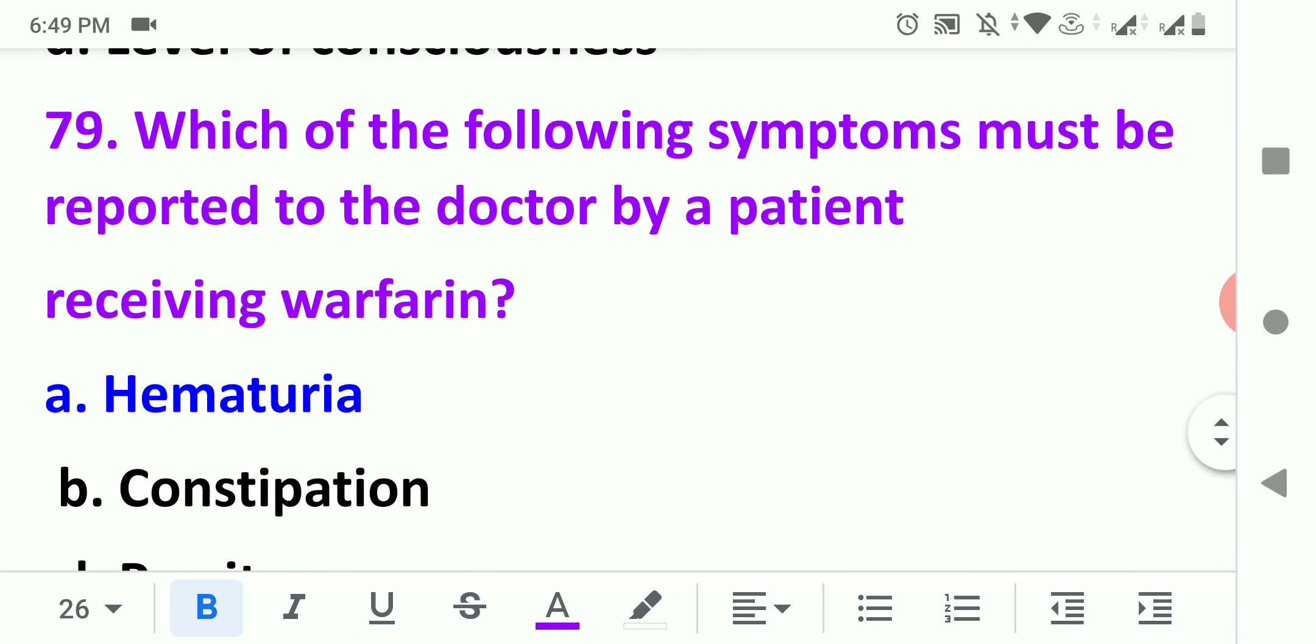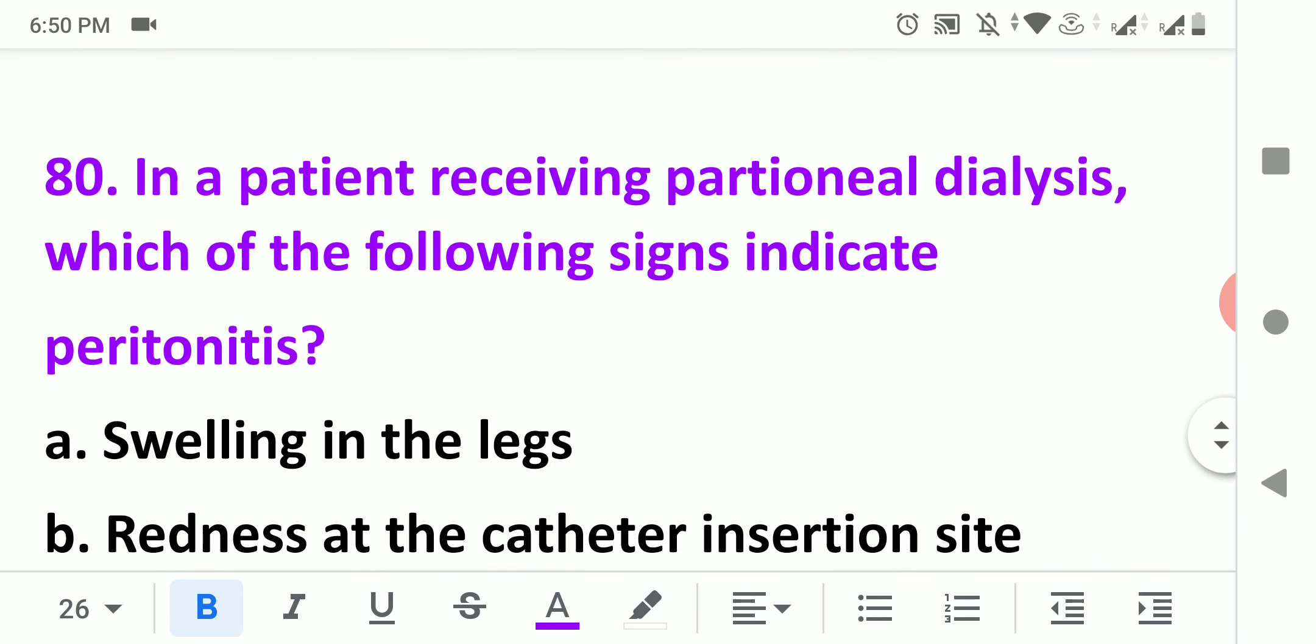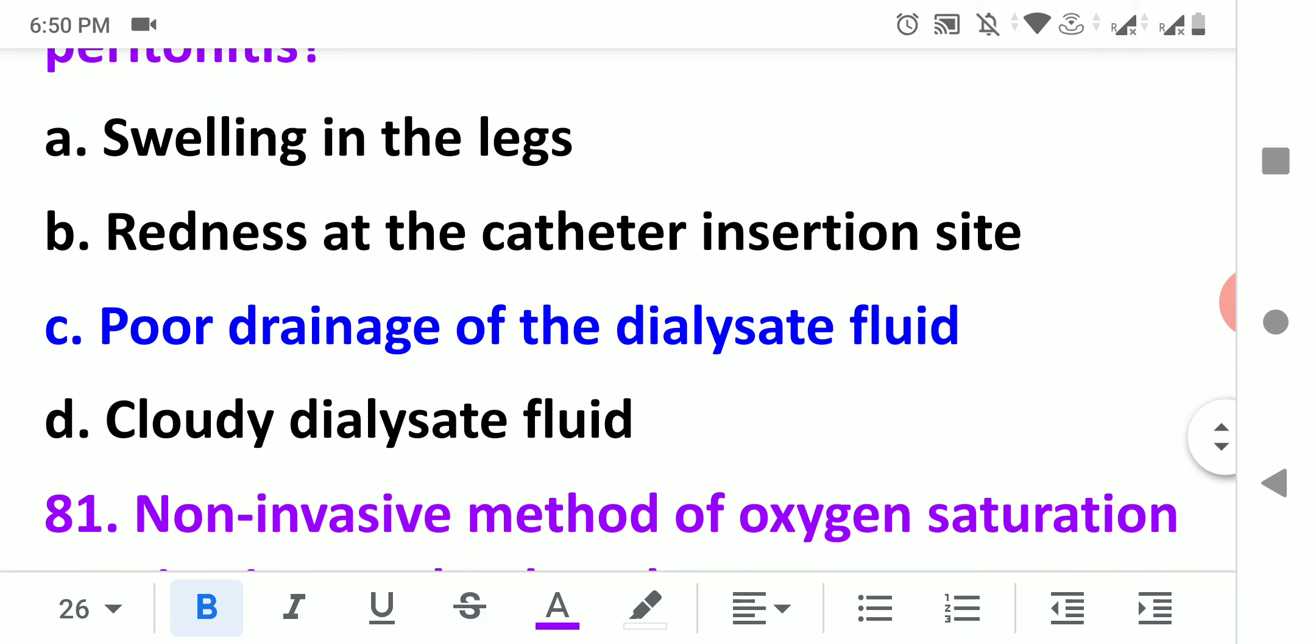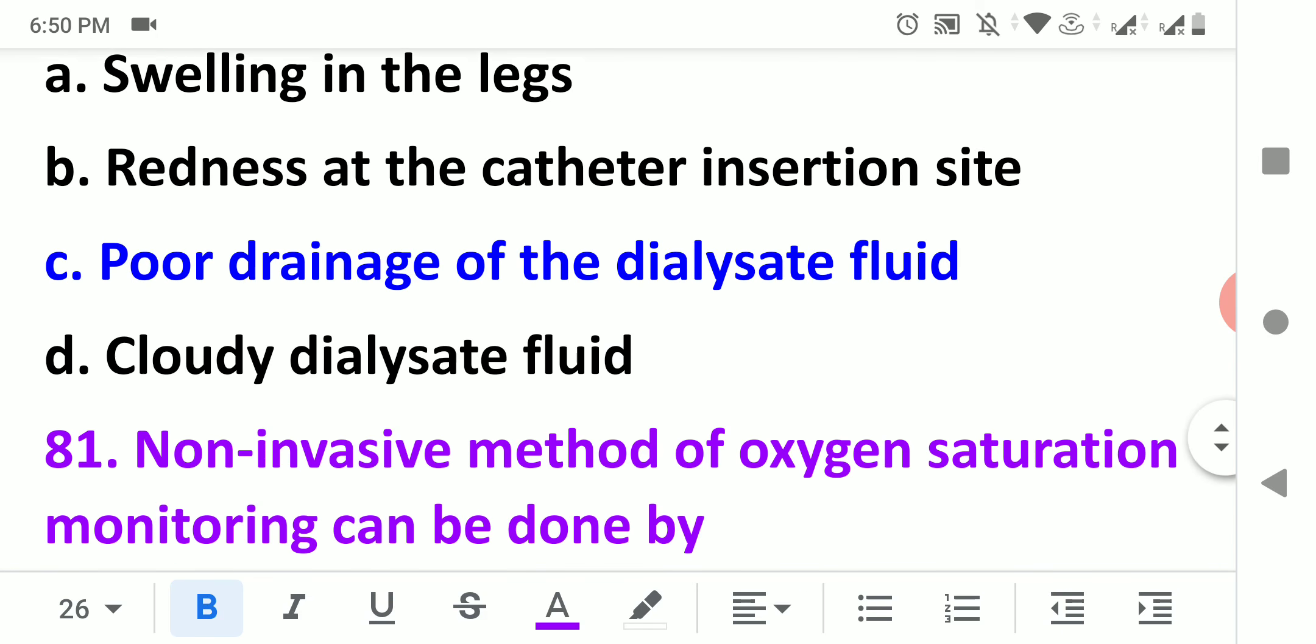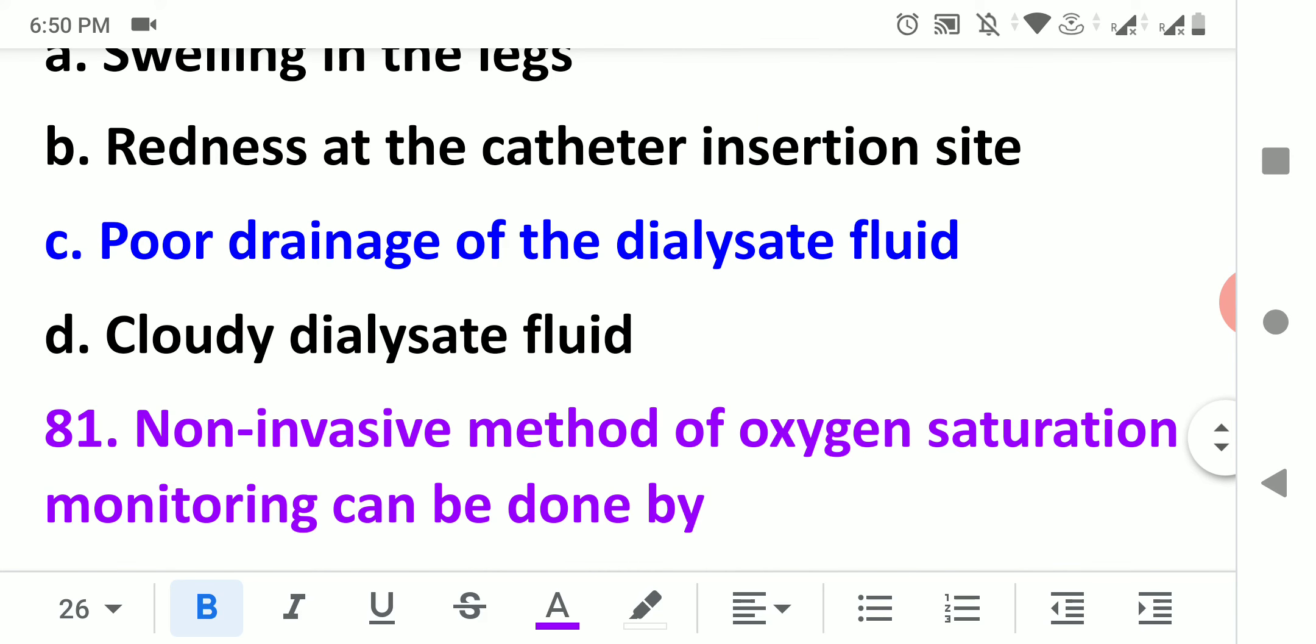In a patient receiving peritoneal dialysis, which of the following signs indicate peritonitis? Peritonitis is the inflammation of the peritoneum. What happens is that there is poor drainage of the dialysis fluid.